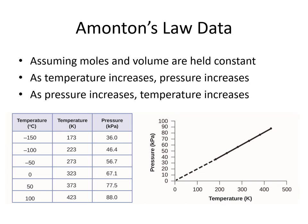We can graph the data for Amontons' law. We should get a nice straight line — putting pressure on one axis and temperature on the other. As temperature goes up, pressure goes up and vice versa. This assumes that moles and volume are held constant; if those two things are not held constant, we can't use Amontons' law as written.